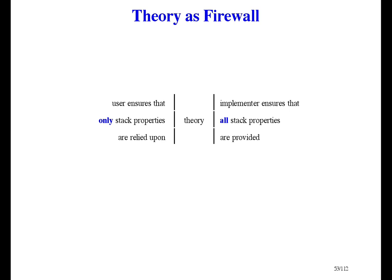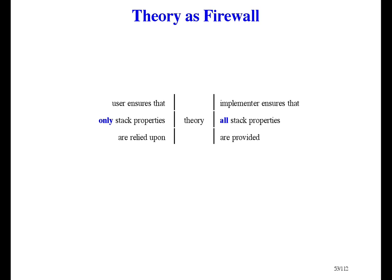Here's a point worth making again. A theory, or a specification, acts as a firewall between the people who use the theory and the people who implement the theory. This becomes more important as the software becomes larger. The users can use only the properties provided by the theory, and not any extra properties that the implementation may have. The implementer has to provide all the properties of the theory. That way, the user doesn't have to know about the implementation, and the implementer doesn't have to know about the uses of the theory. So they are each free to make changes on their own side of the firewall without affecting anything on the other side.